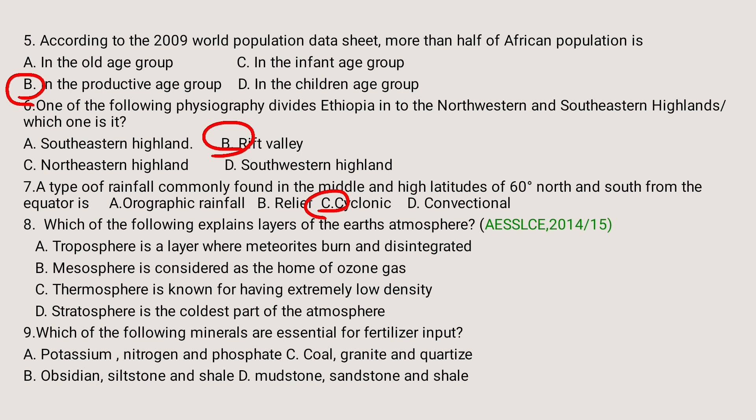Question number eight: Which of the following explains the layers of the Earth's atmosphere correctly? A) The thermosphere is a layer where meteorites burn and disintegrate. B) The mesosphere is considered the home of ozone gas. C) The thermosphere is known for having extremely low density. D) The stratosphere is the coldest part of the atmosphere. The correctly represented layer is C — the thermosphere is known for having extremely low density.